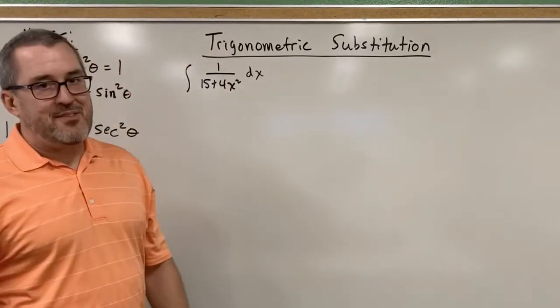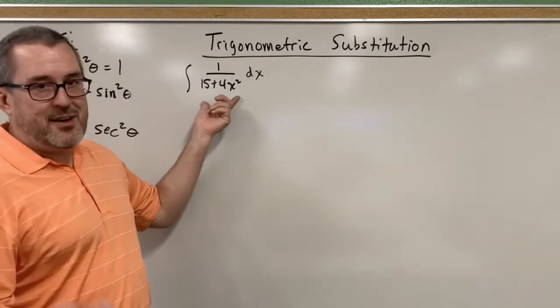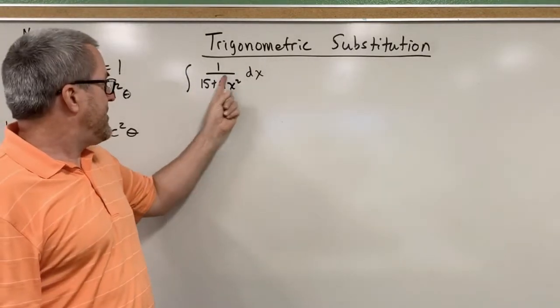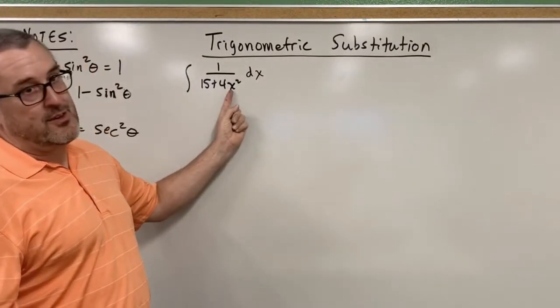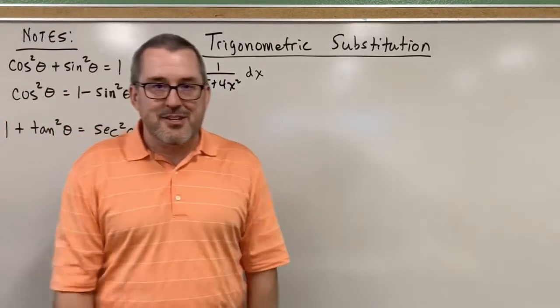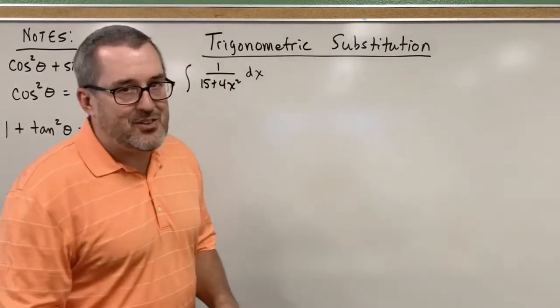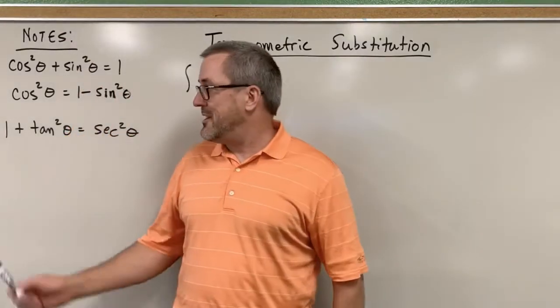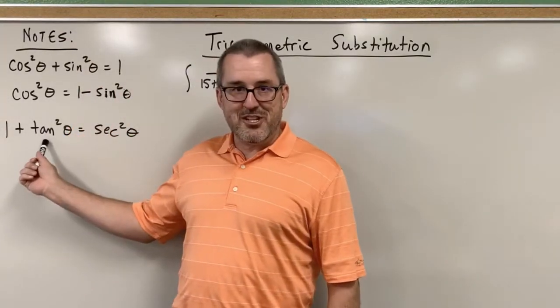In this case, we have kind of a mess. We don't have an anti-chain rule kind of a thing because the derivative of this quadratic would be a linear which is not there, and so we just need another technique, and the technique in this case is the trigonometric substitution of tangent of theta.